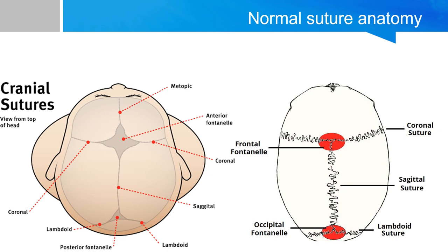Here's a quick review of normal suture anatomy when you look at the infant's skull from the top-down view. You have the metopic suture, coronal sutures, sagittal suture, and lambdoid suture, with the anterior and posterior fontanelles. These sutures eventually fuse and the fontanelles eventually disappear, becoming the normal adult bone.